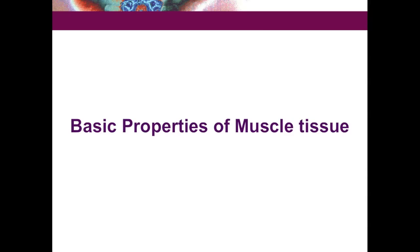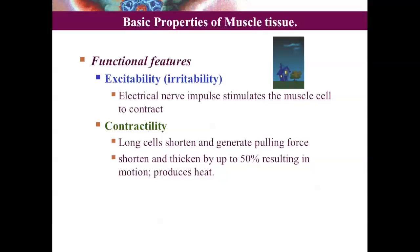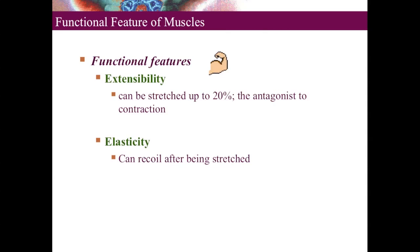There are certain basic properties of all muscle tissues. First is excitability — whenever there is an impulse, the muscle cell excites and contracts, and contraction can result in up to 50% shortening of the muscle cell. Extensibility is the ability to be stretched — a muscle cell can be stretched up to 20%. Coming back to its normal position after relaxation is called elasticity.